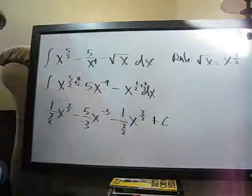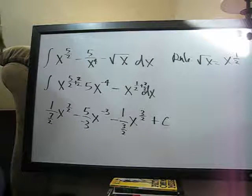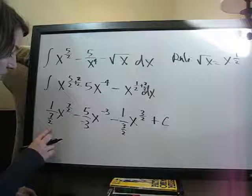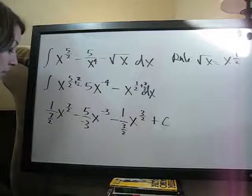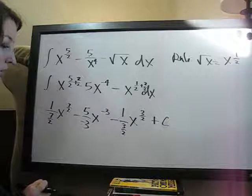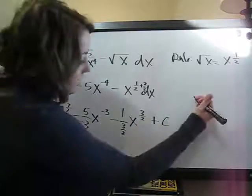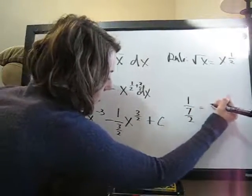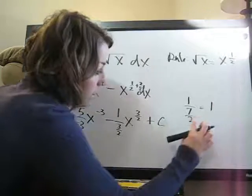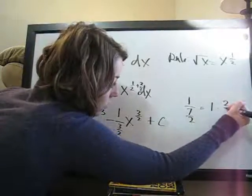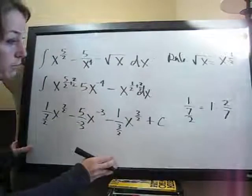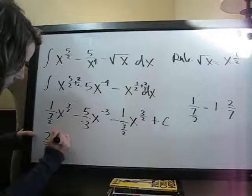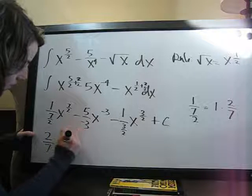So, now we have our integral, and all we have to do is simplify it. So, 1 over 7 halves, as we mentioned in the last video, instead of dividing by a fraction, we can multiply by its inverse. So instead of 1 over 7 halves, that's the same thing as 1 times the inverse of the fraction, 2 over 7. So 1 times 2 over 7 is 2 over 7, so 2 sevenths, x to the 7 halves.